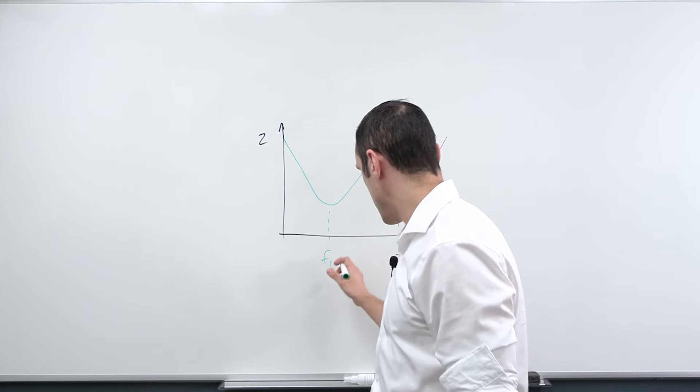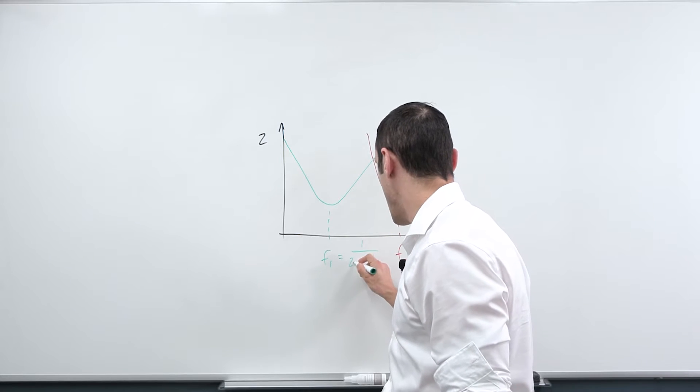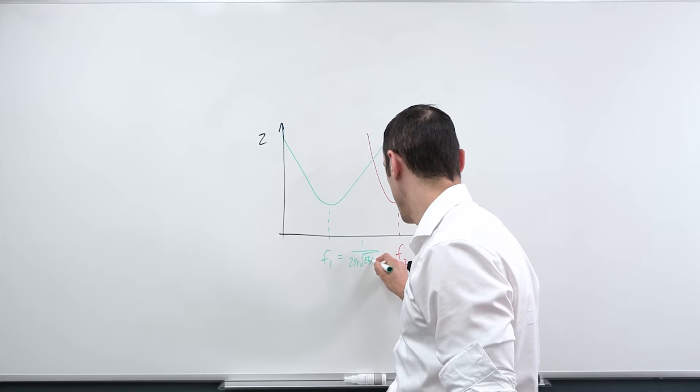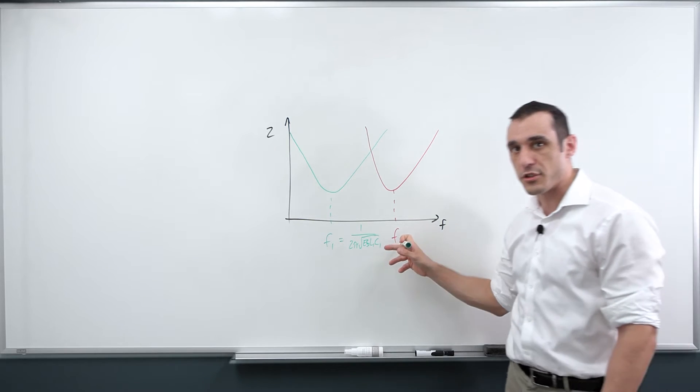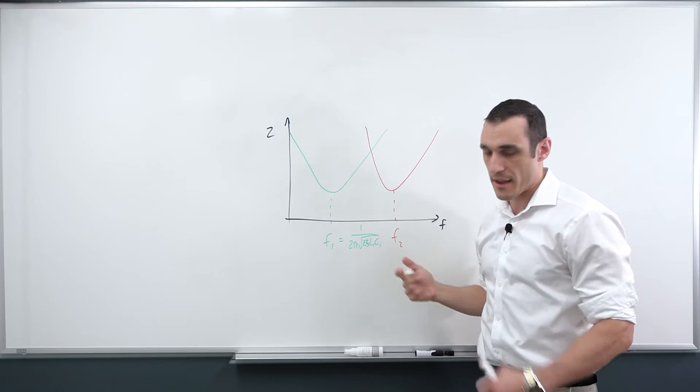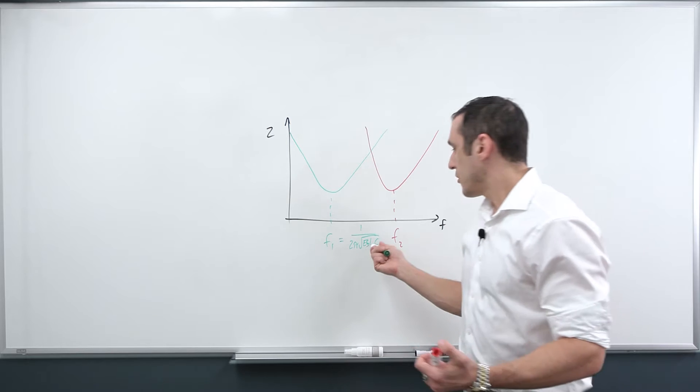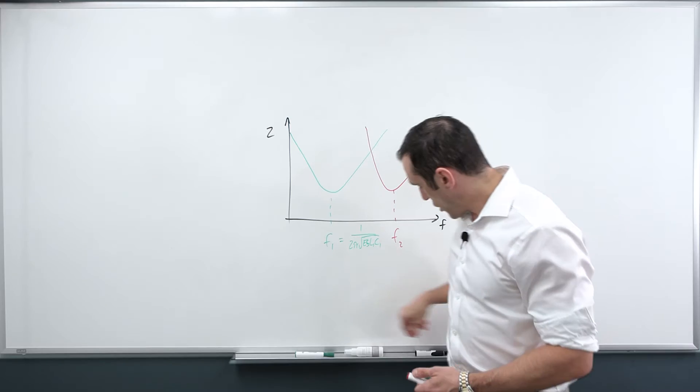So for this F1, this is just equal to one over two pi square root of ESL1 times C1. And then we have the same type of equation for F2. Instead of a one here, I would just have a two. So you can look up those values in the data sheet. Now you might be wondering, what does the ESR value affect? How does the ESR value play into this?